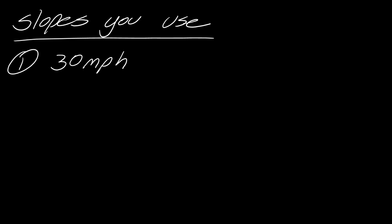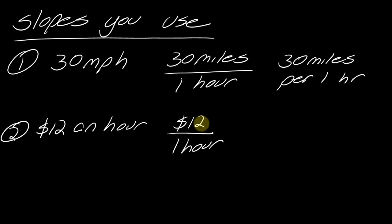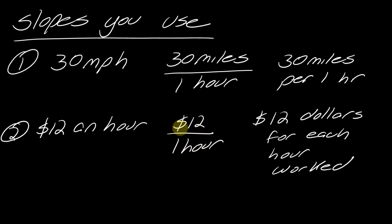Ways that you use slopes would be like 30 miles per hour. From a mathematical standpoint we would think of that as 30 miles per one hour — you drive 30 miles per every one hour of driving. Or another way would be a job that pays $12 an hour. We would view this as a slope, and intuitively we know it's $12 for each hour worked. So we've got this mathematical way that we look at it and then we have our everyday interpretation of that.